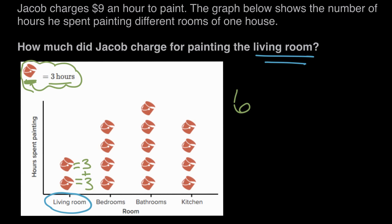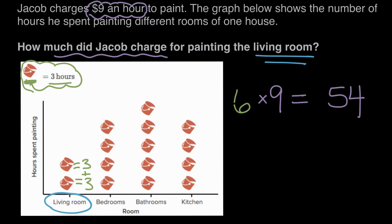But the question asks us how much did Jacob charge? Jacob charges $9 for every hour, and he worked for six hours, so he charged $9 six times — $9 for each of the six hours he worked — which is a total of $54. Jacob charged a total of $54 to paint the living room.